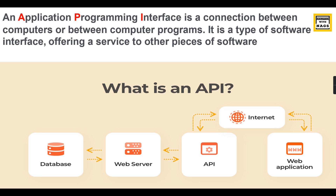Let's begin with its definition. API stands for Application Programming Interface — it is a connection between computers or between computer programs. It is a type of software interface offering a service to other pieces of software. Let us take an example: you have one database and a web server, a website and your application.